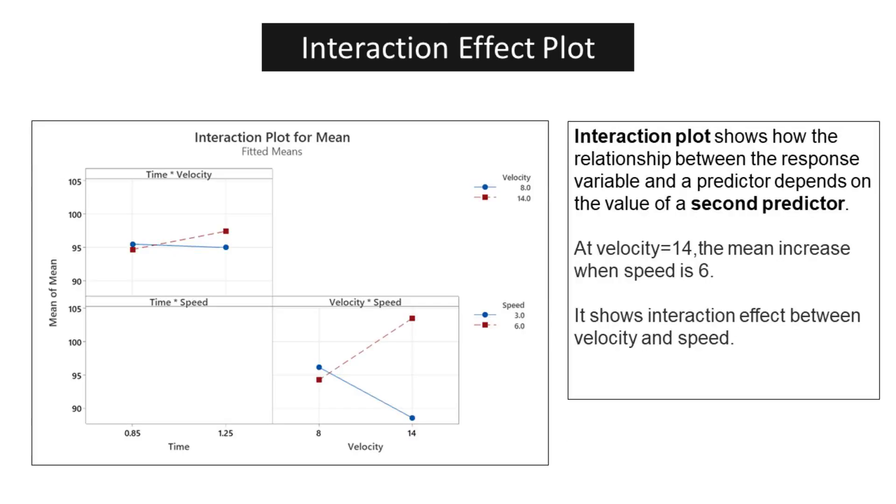Interaction plot shows how the relationship between the response variable and a predictor depends on the value of a second predictor. At velocity equals 14, the mean increases when speed is 6. It shows interaction effect between velocity and speed.